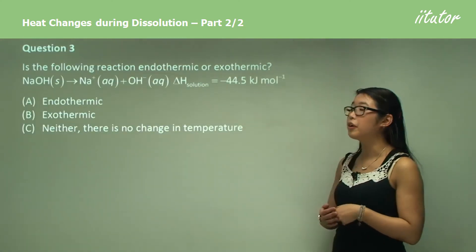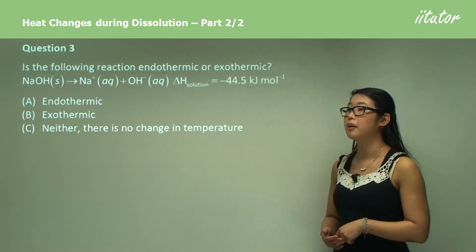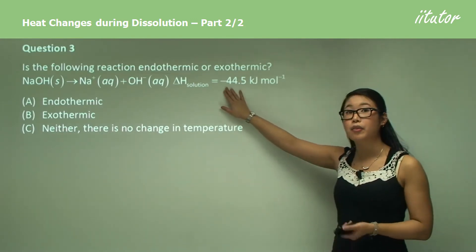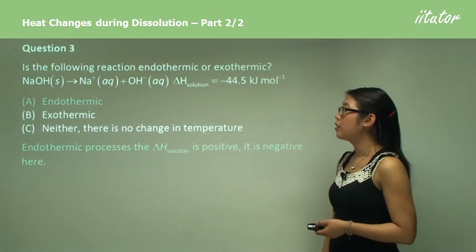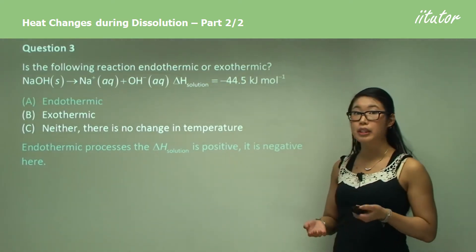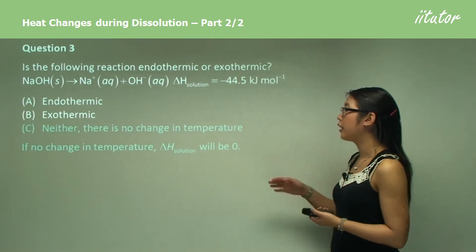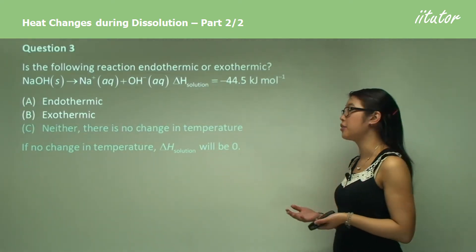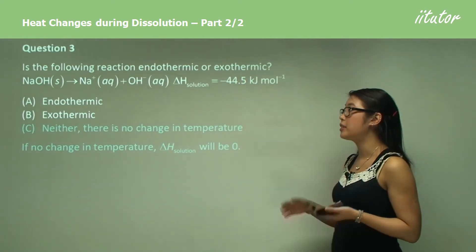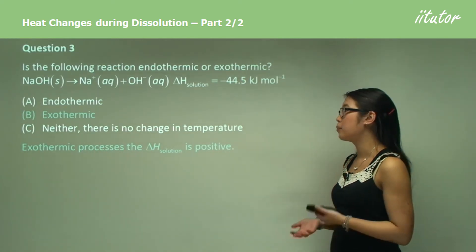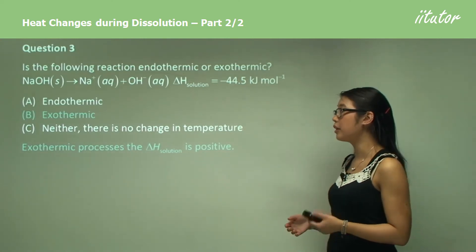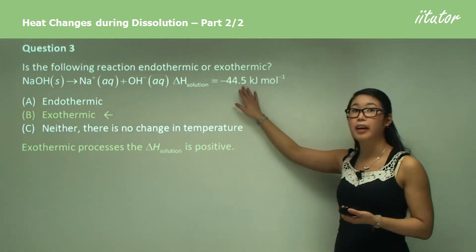Question three: is the following reaction endothermic or exothermic? We look at the reaction, but what we really need to take note of is the delta H — is it negative or positive? Endothermic processes have a positive delta H, and in this case it's negative, so that's incorrect. If it's neither endothermic nor exothermic, the delta H will be zero, but we have a negative number here. A negative delta H means exothermic, because exothermic reactions produce energy. So the answer is B — negative delta H is exothermic.